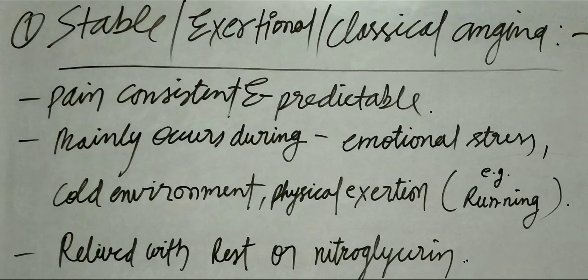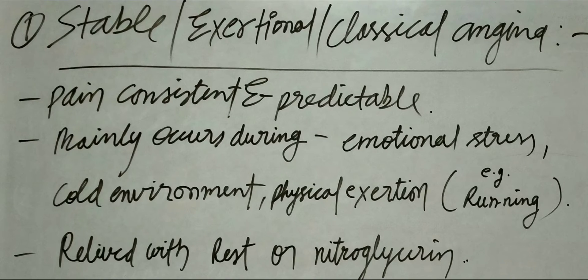In this type of Angina, chest pain or discomfort is consistent and predictable. It can occur during emotional stress, cold environment, or by physical exertion — for example, running. This type of pain and discomfort is usually relieved by rest and nitroglycerin.